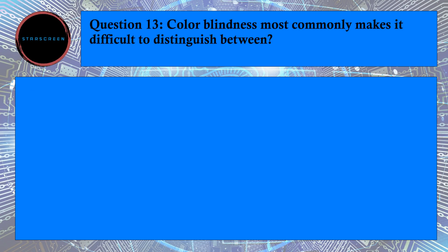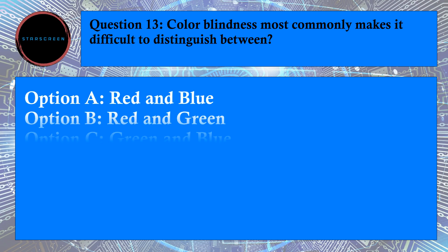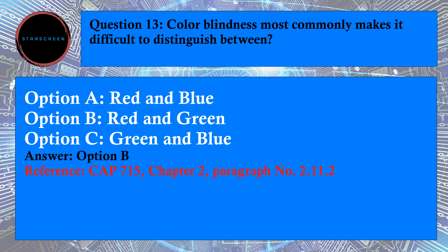Question number 13: Colorblindness Most Commonly Makes It Difficult to Distinguish Between? Option A, Red and Blue, Option B, Red and Green, and Option C, Green and Blue. Correct answer is B, Red and Green. For answer, refer to CAP715, Chapter 2, Paragraph number 2.11.2.